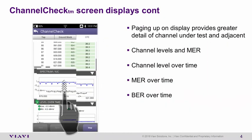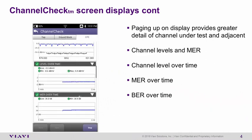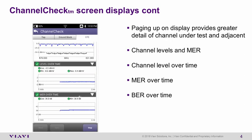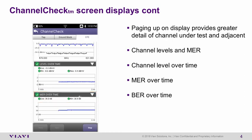Looking at level over time for channel 87, we see it hasn't drifted by more than one tenth of a dB — a max of 0.4 and a min of 0.5, with the live measurement currently bouncing between those values. MER over time shows that our current MER is at 39.3 dB, but we've dropped down by four tenths of a dB to 38.9.